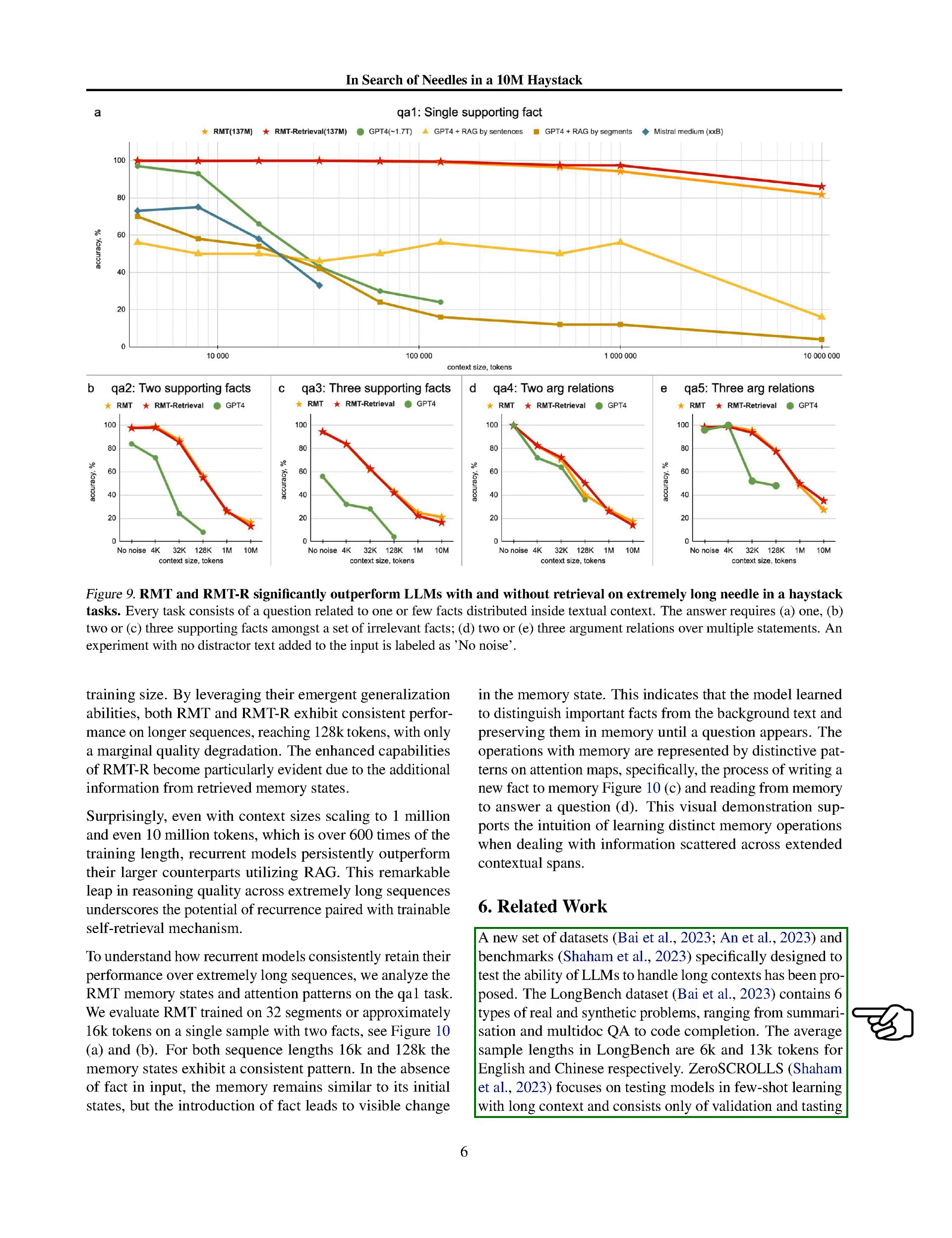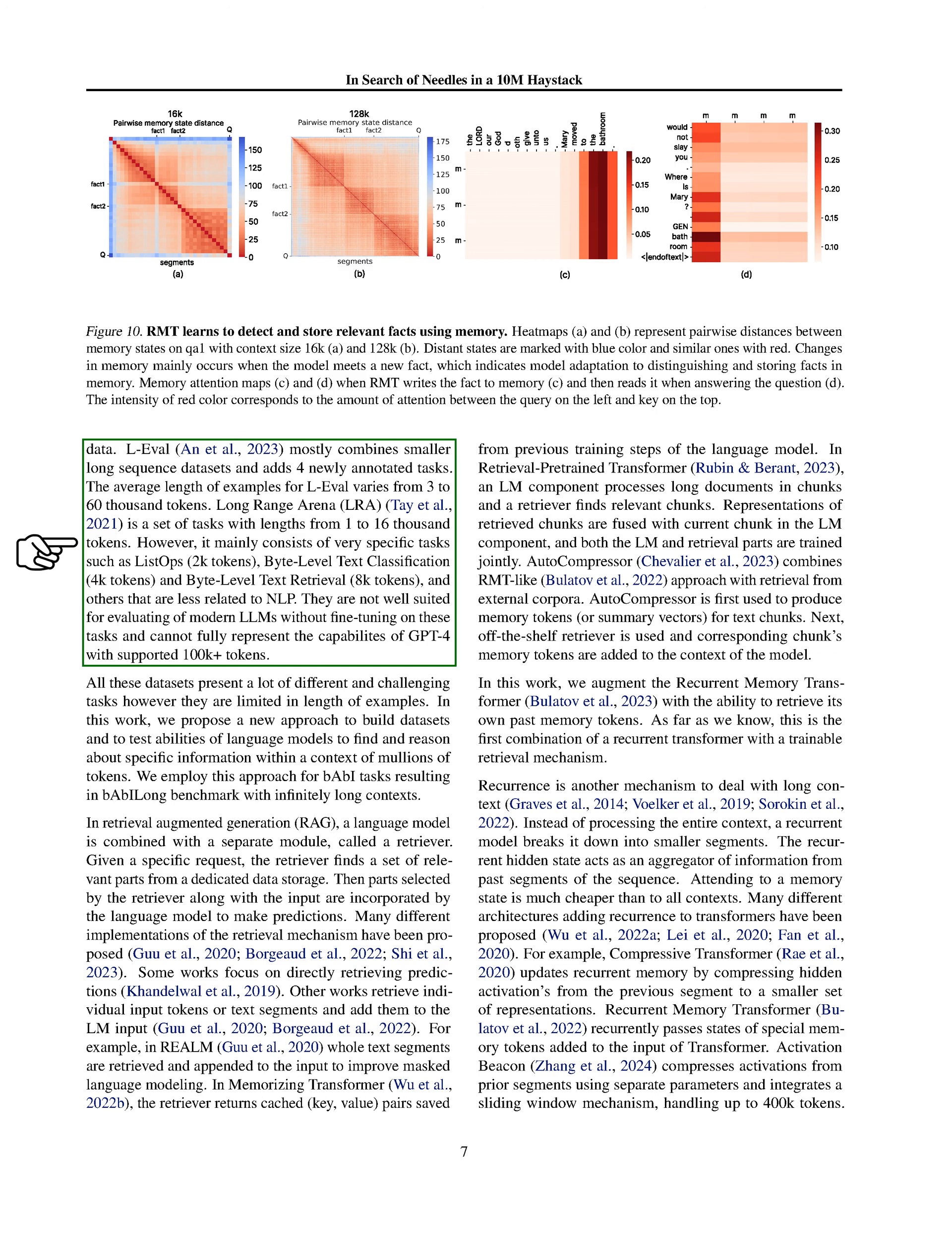Another dataset, ZeroScrolls, aims to test models' few-shot learning capabilities in long contexts and includes only validation and testing data. L-Eval combines several smaller long sequence datasets and introduces four new tasks, with example lengths ranging from 3,000 to 60,000 tokens. The Long Range Arena (LRA) includes tasks with lengths varying from 1,000 to 16,000 tokens but focuses on very specific tasks that are not directly related to natural language processing (NLP), making it less suitable for evaluating modern LLMs like GPT-4, which supports contexts of over 100,000 tokens.